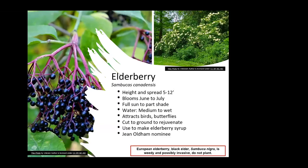Elderberry is a neat plant that grows wild all over, with a height and spread of five to twelve feet, blooming in June to July. It takes full sun and likes medium to wet soil. It will attract birds and butterflies. If you want to make elderberry syrup, you'll have to cover some of your berry bundles as they're getting ripe because the birds will take them all — it makes a wonderful syrup.